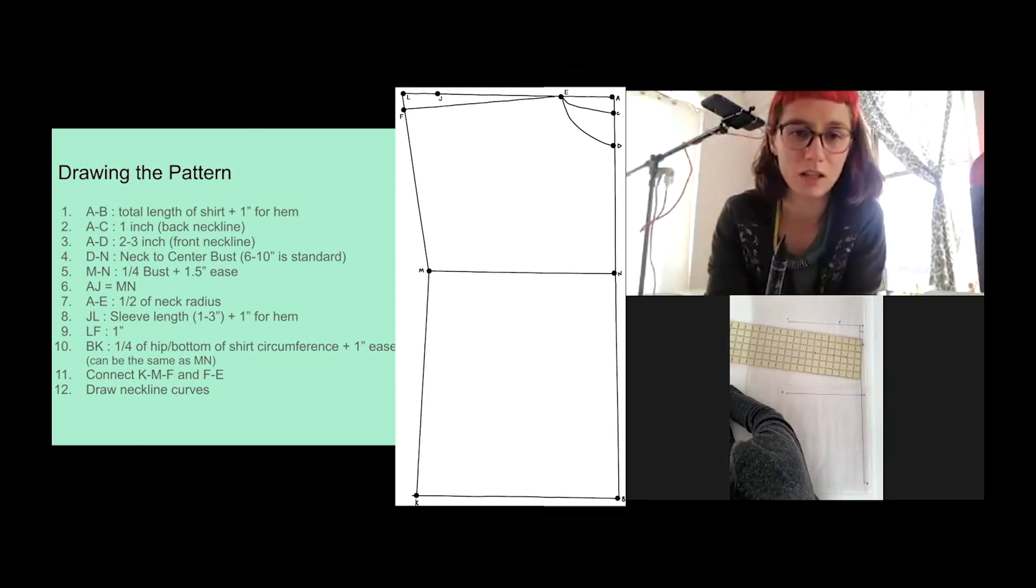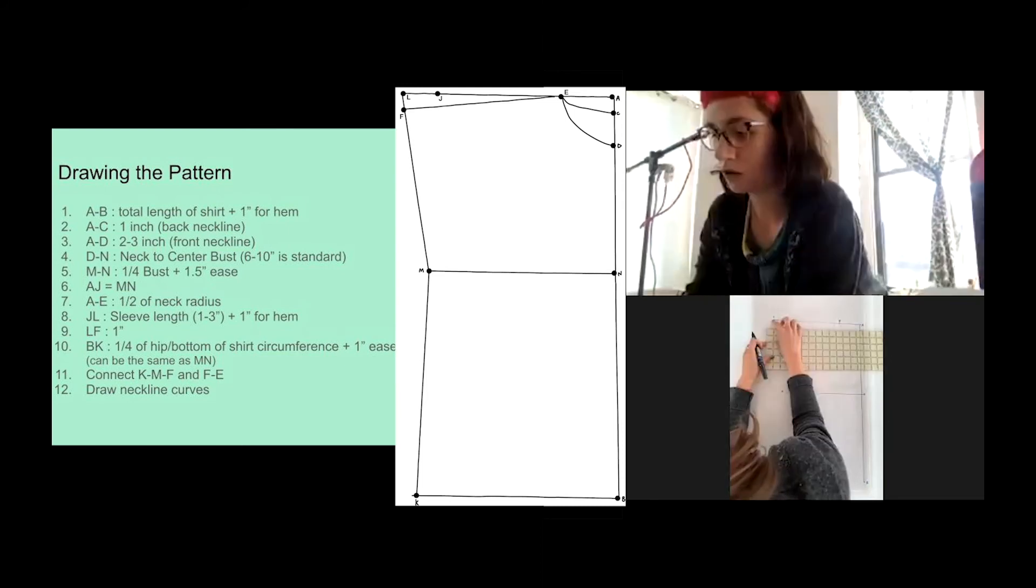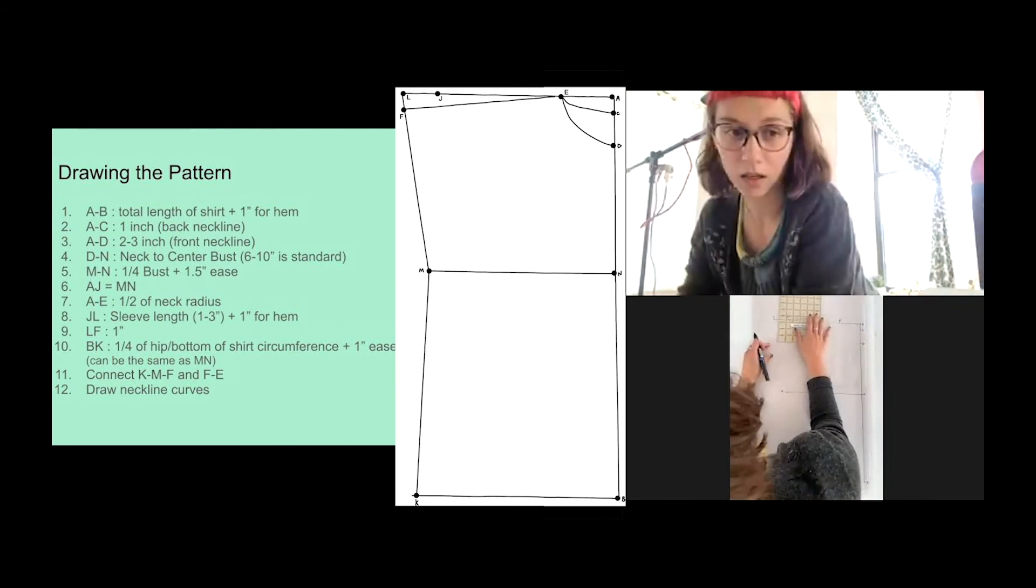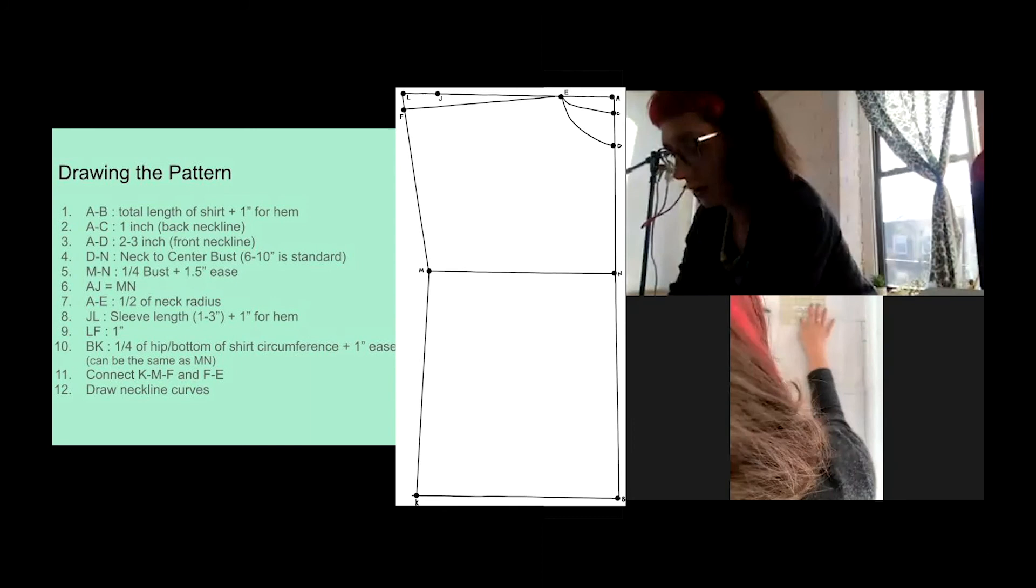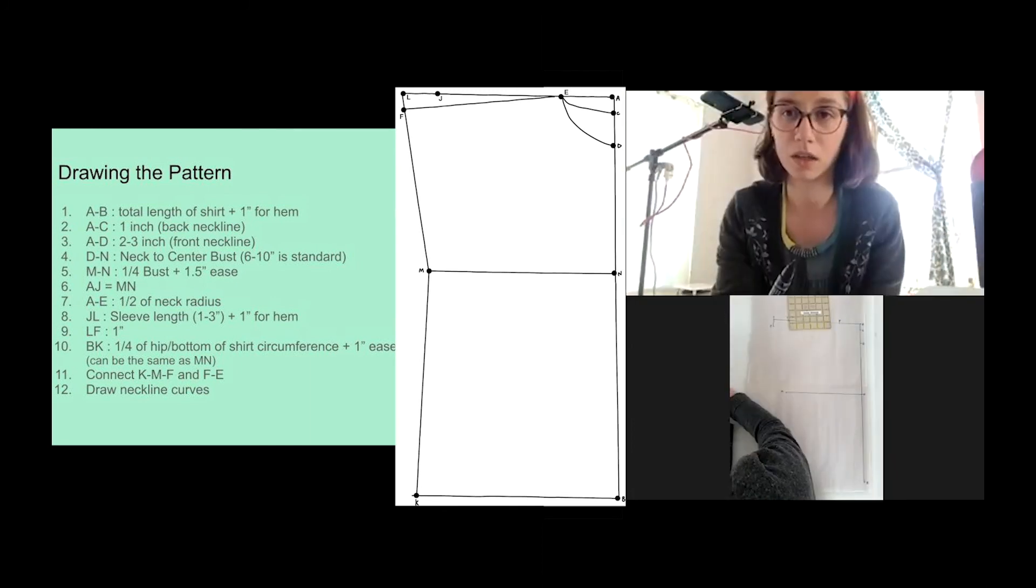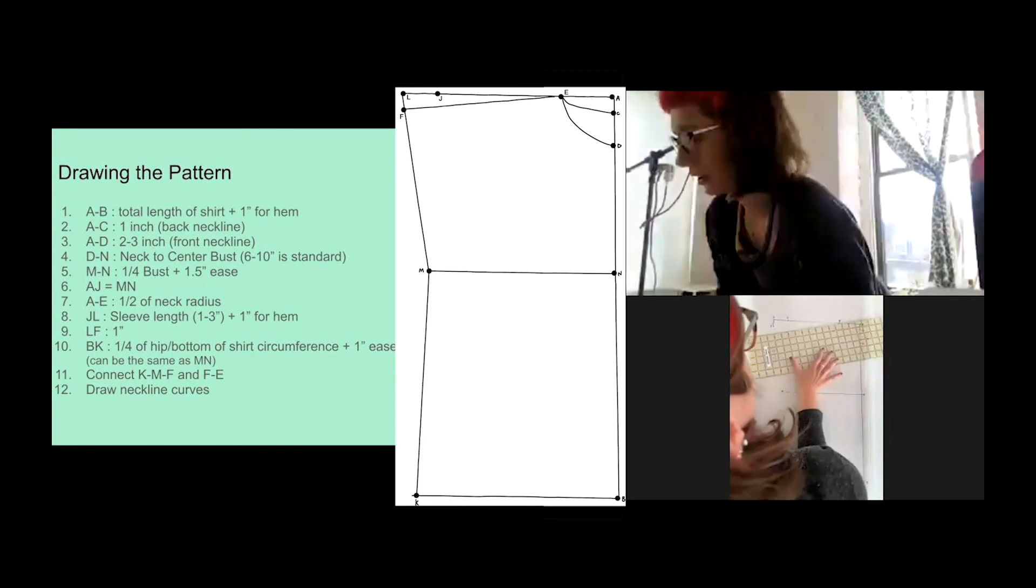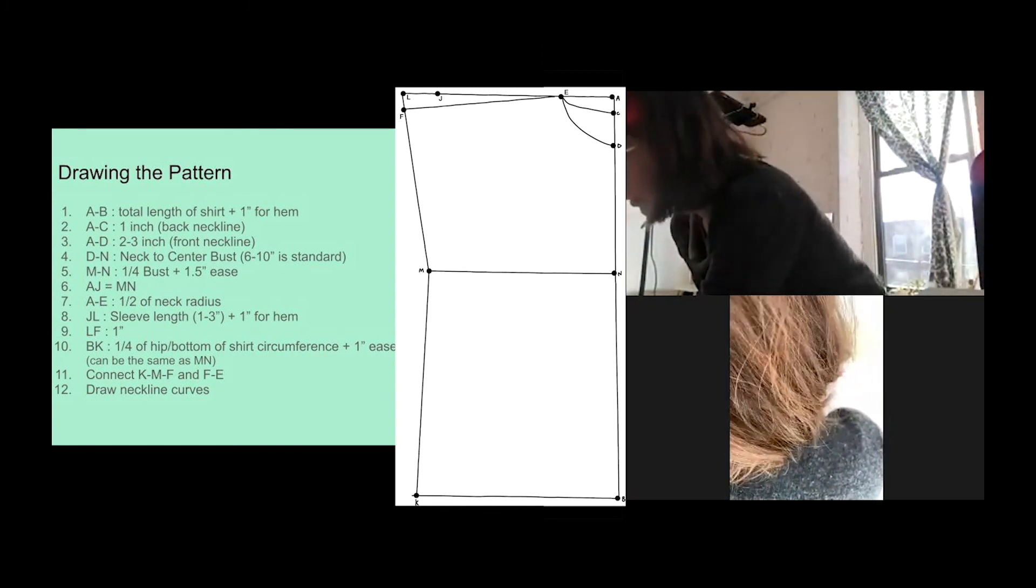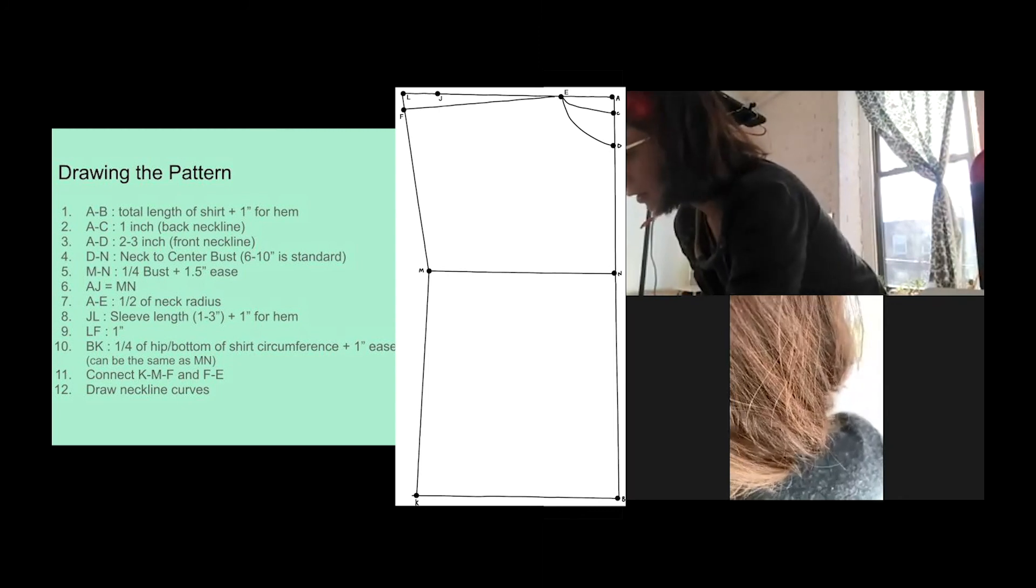Now we're going to do J to L, which is going to be your sleeve length. Also perpendicular down from L, you're going to do one inch. That is to mark your shoulder slope. You can go ahead and connect E to F. That's just taking your ruler, finding the two points and then drawing that diagonal line straight across. So that's going to be your shoulder seam.